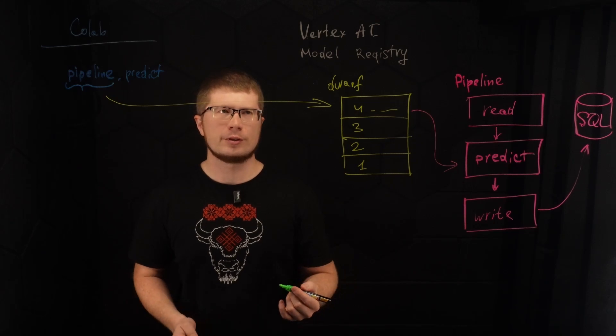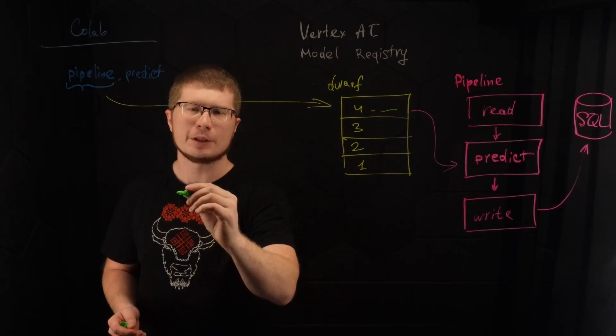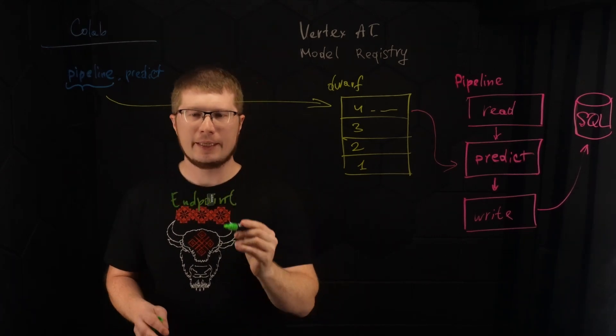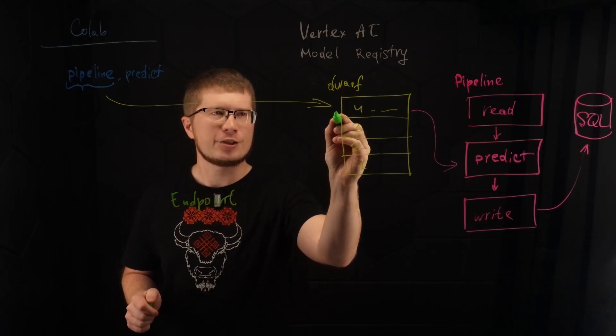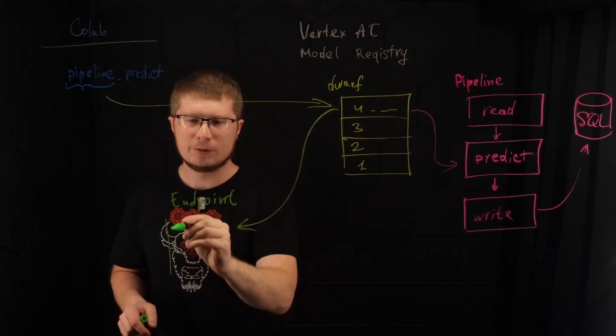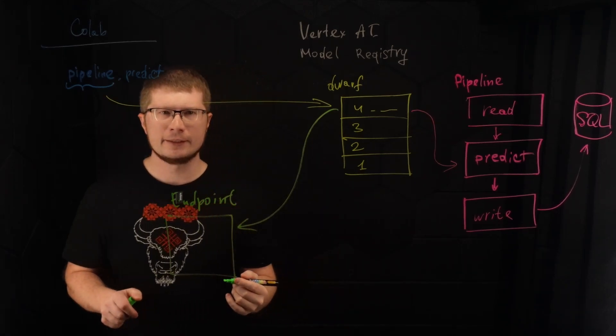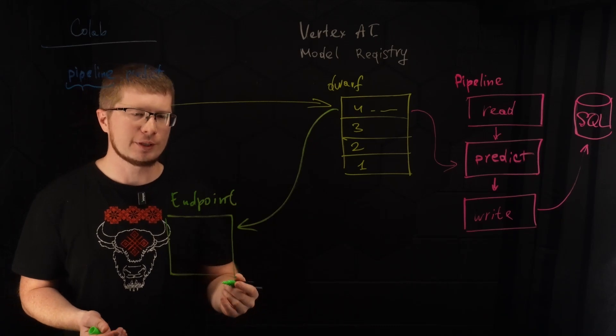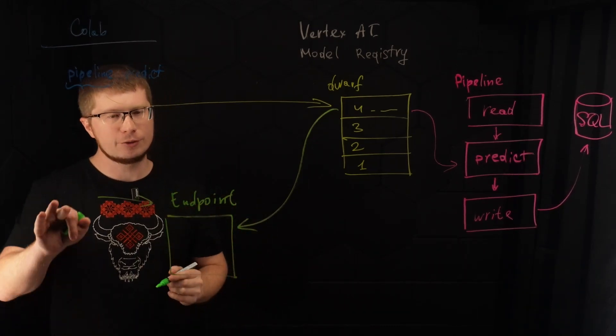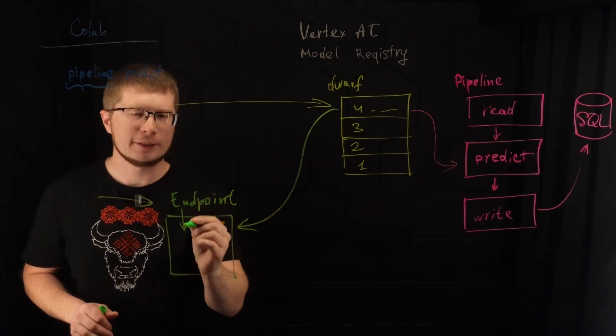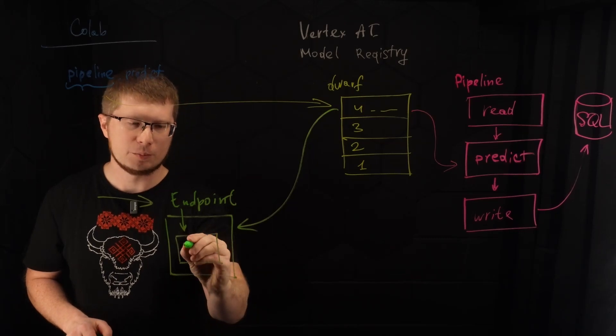But there are other ways to use Vertex AI model. First we can create a real-time endpoint. This endpoint will be created by Vertex AI and we can attach a model to it. So how it works? Inside it creates a pod in Kubernetes, and inside Kubernetes it's a Docker container. The endpoint, which is available for the other services, will forward the inference calls into this Docker container. And it's our model inside.